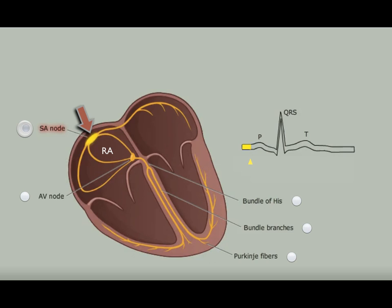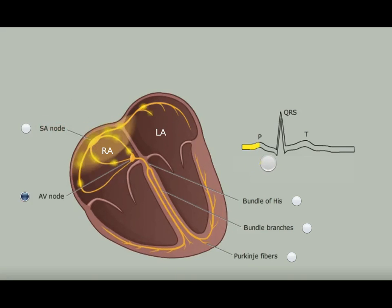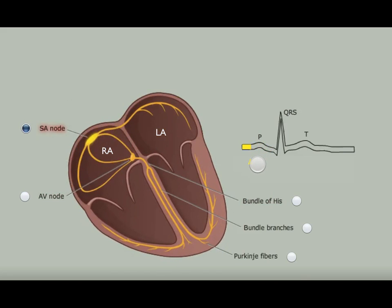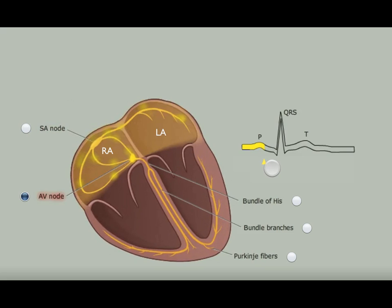If you drag back and forth over the atrial depolarization, you can see this order and overlap. Depolarization of the atria corresponds to the P wave on the ECG tracing. The AV node is a group of specialized cells that conduct slowly.